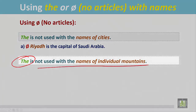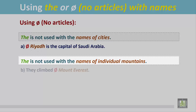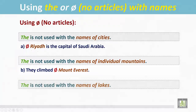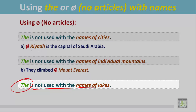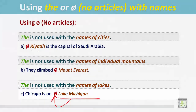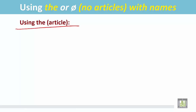'The' is not used with the names of individual mountains. For example: 'They climbed Mount Everest.' It is the name of an individual mountain, and there is no article before it. 'The' is also not used with the names of lakes. For example: 'Chicago is on Lake Michigan.' It is the name of a lake, and there is no article before it.